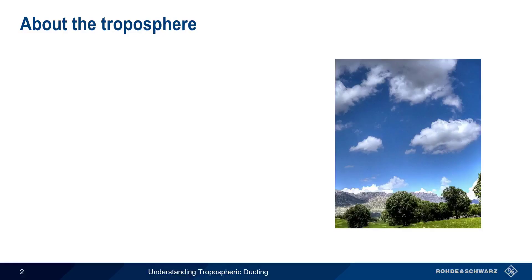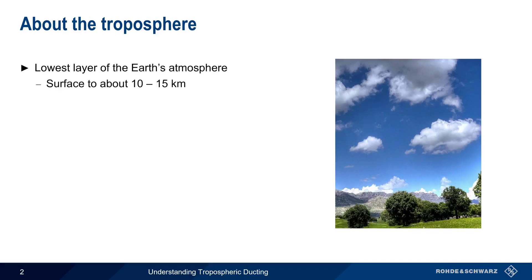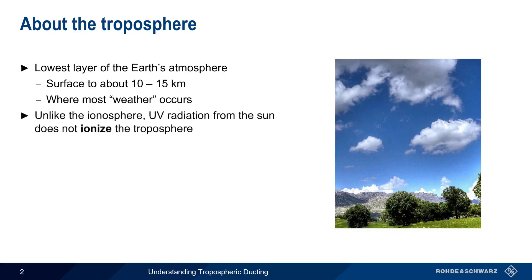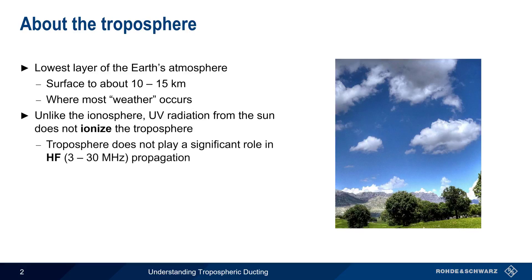Let's start with an overview of the troposphere, which is the lowest layer of the Earth's atmosphere. It extends from the Earth's surface to an altitude of approximately 10 to 15 kilometers and is where most weather occurs. Unlike the ionosphere, which is strongly affected by UV radiation from the sun, the troposphere is not ionized by solar radiation, and therefore does not play a significant role in HF propagation.